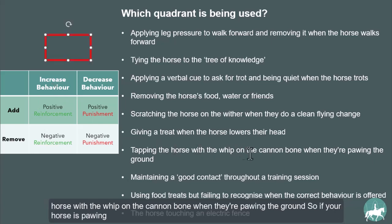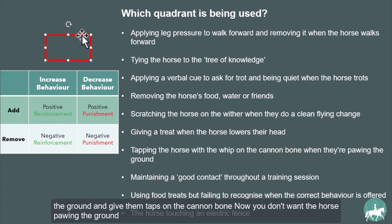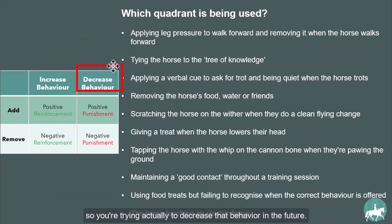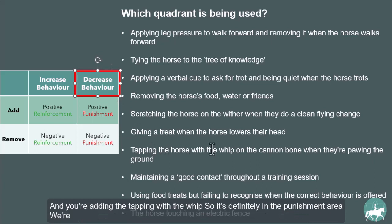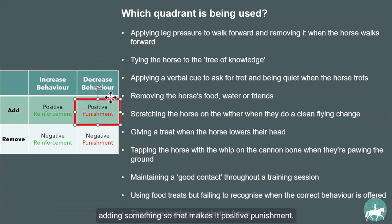Tapping the horse with the whip on the cannon bone when they're pawing the ground. You don't want the horse pawing the ground, so you're trying to decrease that behavior in the future. You're adding the tapping with the whip, so it's definitely in the punishment area. We're adding something, which makes it positive punishment.